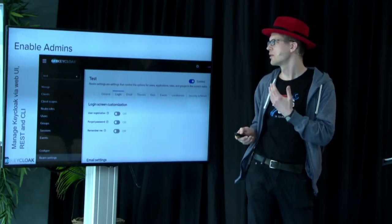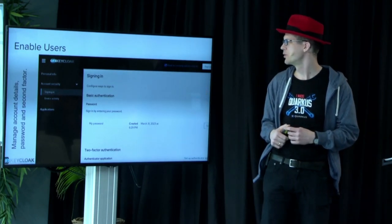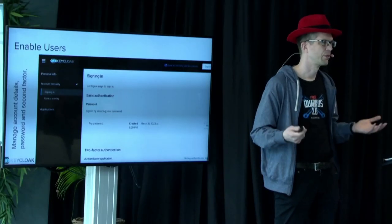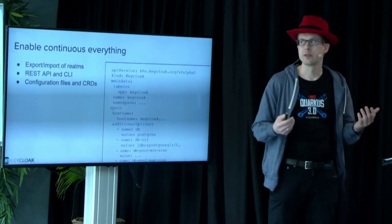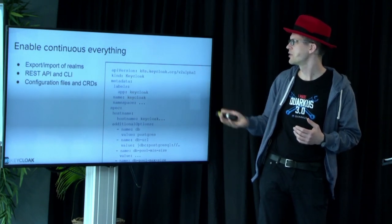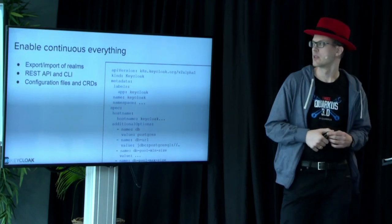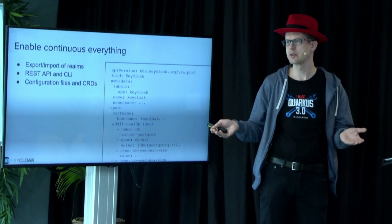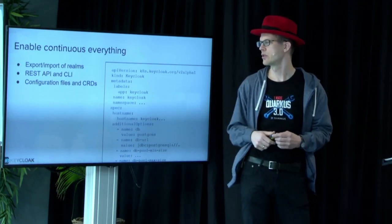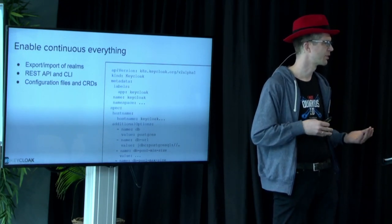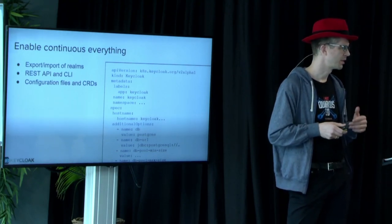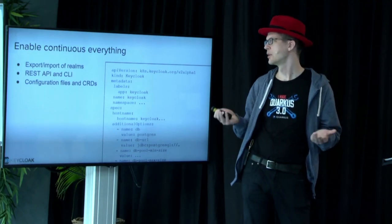There's also a UI for the users themselves — not just the admins. Users can manage their passwords, manage their second factor, and update their user details. All this UI is there and ready as part of the full user management. For a continuous everything infrastructure, everything should be scripted — some call it GitOps. You can do that by exporting and importing Realms. A full Realm exported as JSON can be imported when you start a new Keycloak instance, and it's fully set up from that export. Or you can use the REST API or CLI to add clients and users individually. Configuration files and CRDs are also supported — for example, to set up a new Keycloak instance using the operator, you fill out a CR specifying the hostname and the database to connect to.